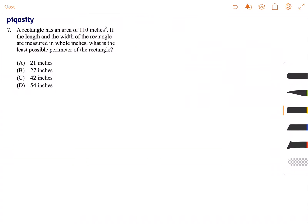This is Stephen, and this question is dealing with your knowledge of area and perimeter of rectangles. The question reads, a rectangle has an area of 110 inches squared.